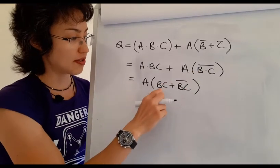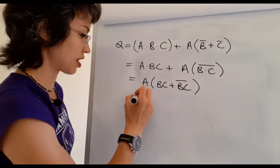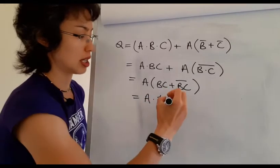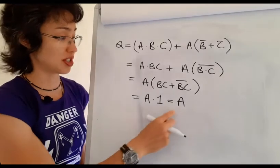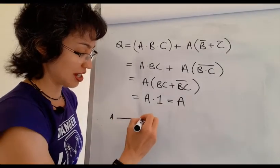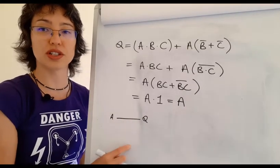And you know that if you have something OR NOT that something that's always going to be equal to 1. That's one of our basic algebraic rules. So this thing is just the equivalent to A. So our input is equal to our output. So we basically just have one line in the circuit and that's what that's equivalent to.